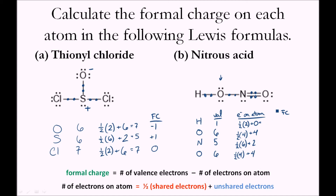The end oxygen has four shared electrons and four unshared electrons. So the electrons on each atom: hydrogen is one, oxygen is six, nitrogen is five, and the end oxygen is six. Valence electrons minus electrons currently on the atom gives the formal charge: hydrogen is zero, oxygen zero, nitrogen zero, and the end oxygen zero. Each atom in the molecule has zero formal charge.